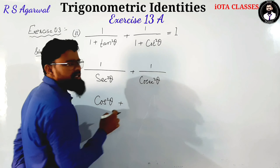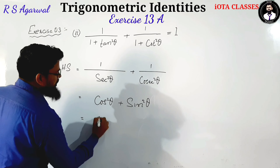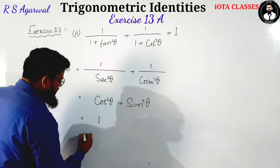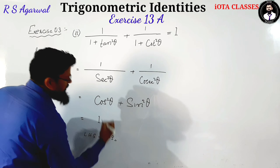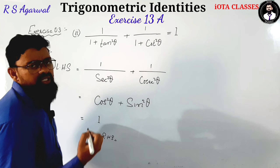1 by sin theta, cos theta. So, cos square theta plus 1 by cos theta, sin theta. Cos theta over cos square theta.